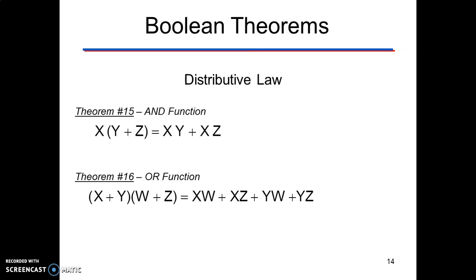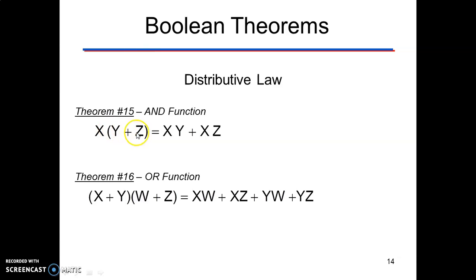Distributive property. Boolean multiplication is distributed over Boolean addition. The OR operation of several variables followed by the AND operation of the result with a single variable is equivalent to the AND of that single variable with each of the several variables, then OR-ing the products. So x·(y+z) = x·y + x·z. Similarly, (x+y)·(w+z) = x·w + x·z + y·w + y·z.